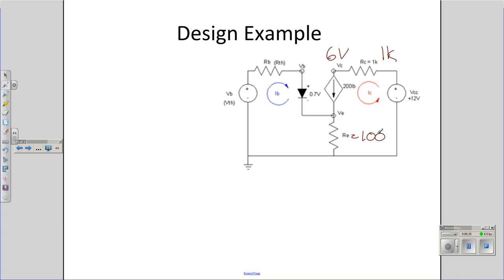Once I specify that, I know IC should be 6 milliamps. I know IB times beta is IC. Just like before, IB winds up being 30 microamps.